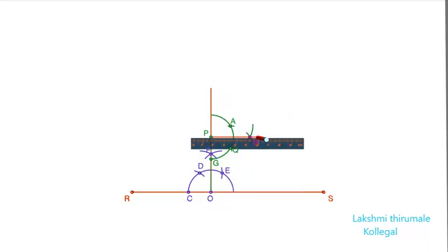Now join PB and extend the line on both sides. On this line, mark any two points on either side. I am marking it as K and L. Now the line KL is parallel to the line RS and is at a distance of 5 cm from the line RS.